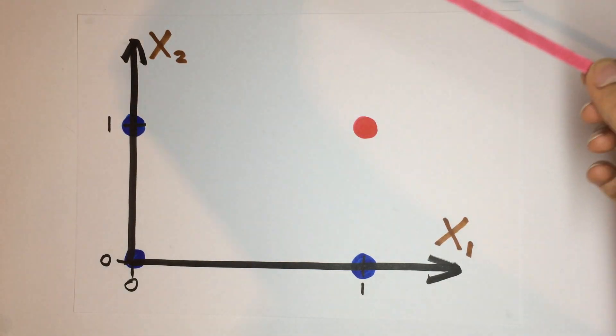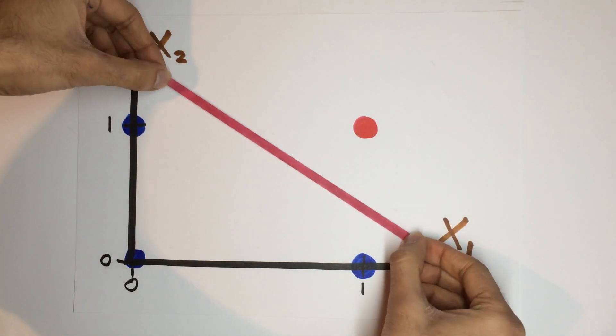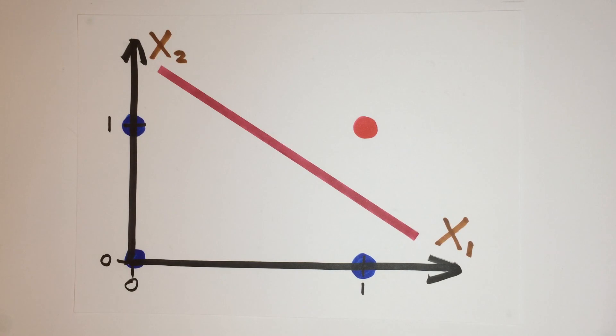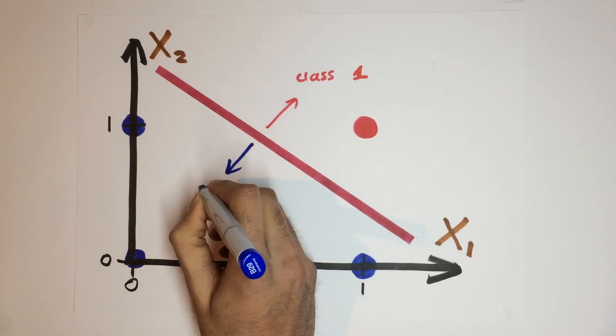We can also visualize this data on a graph with the two inputs as the x and y axes, and the output type distinguished by color. So we can actually separate these two groups with a line. This is very similar to a linear regression, but the difference is that we're not trying to predict a point on the line, but instead trying to predict which class the point belongs to depending on which side of the line it is on. So our equation would need three variables: two for the binary input, and one representing the class of that data point.